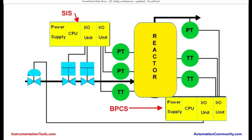It could be a redundant processor or triple modular redundant, where there will be three processors together performing similar functions. In case one fails, the second processor takes over; in case two fail, the third one takes over, and it is still able to take the action. However, it is not safe to run with a single processor in case of a triple modular redundant design. There are other safety requirements for the functionality of the logic solver. These transmitters will give a signal to the safety instrumented system, and after performing the logic, the output will go to the valves to shut the process.